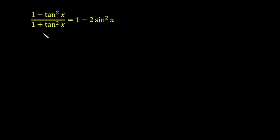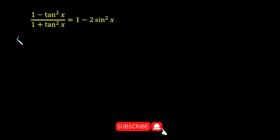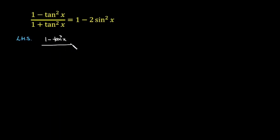Hello friends. In this lecture I am going to prove the given trigonometric identity: (1 minus tangent square x) over (1 plus tangent square x) is equal to 1 minus 2 sin square x. We have to prove that the left hand side is equal to the right hand side. So our left hand side is (1 minus tangent square x) over (1 plus tangent square x).